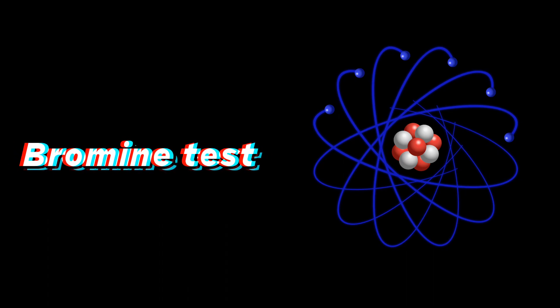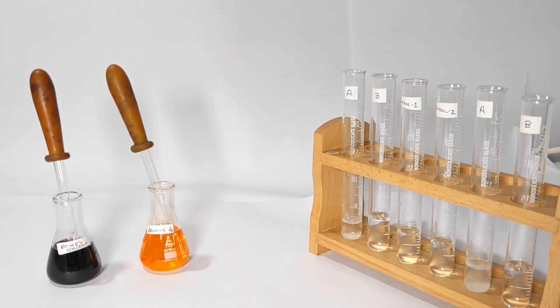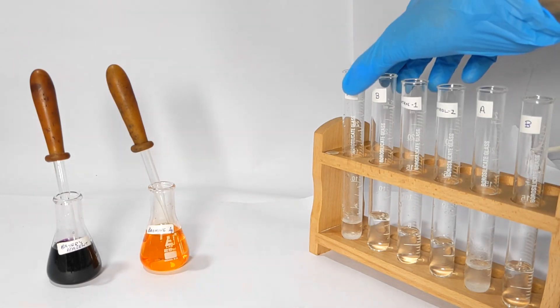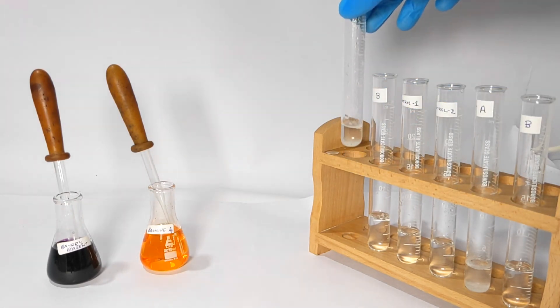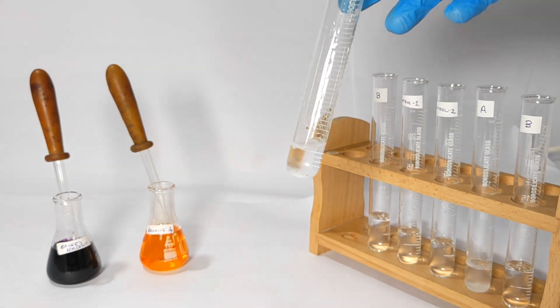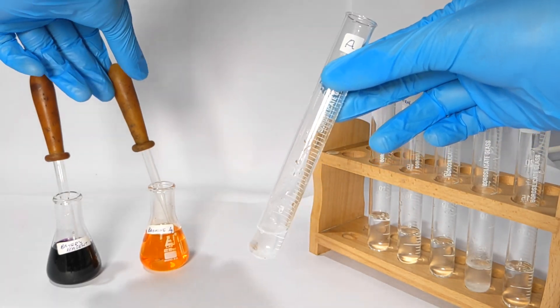We have test tubes marked A and B each containing a different organic compound dissolved in water. The third test tube is a control solution which contains pure water. We will first take the test tube marked A. The reagent that we are using is aqueous bromine, that is bromine vapors dissolved in water.